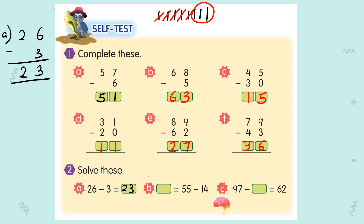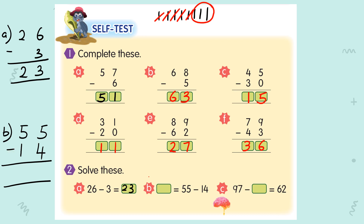For B: 55 minus 14. Count from behind. 5 minus 4 equals 1. 5 minus 1 equals 4. So your answer is 41.